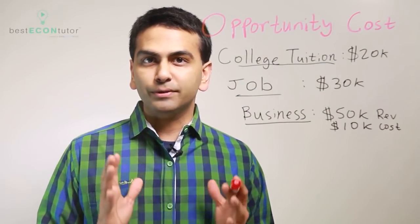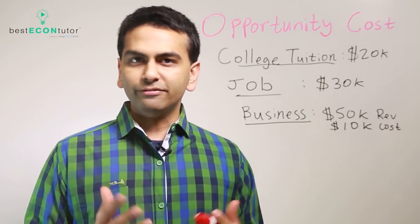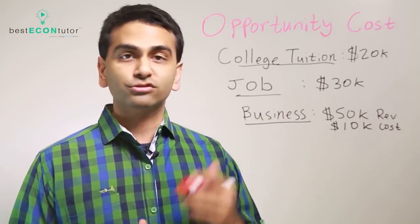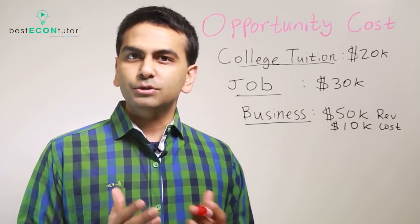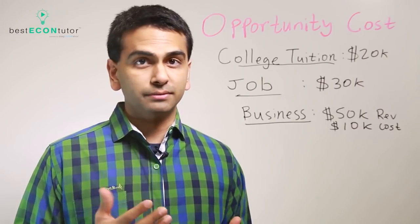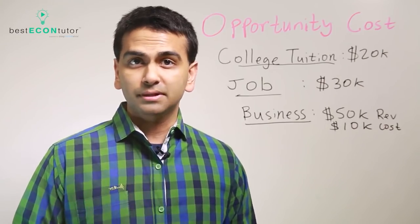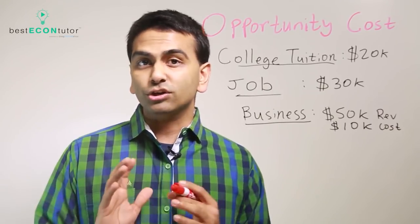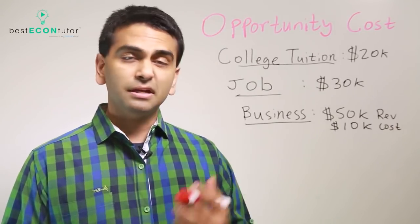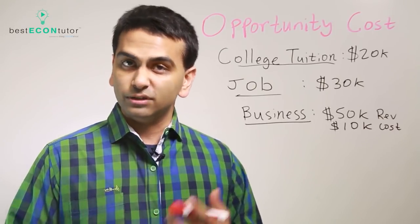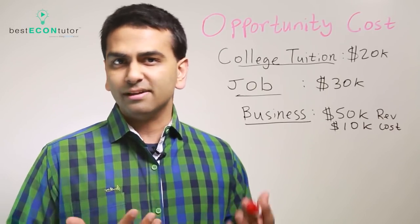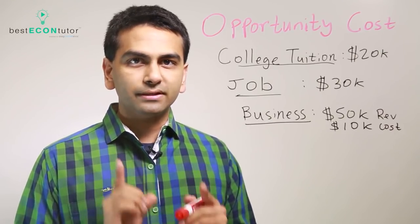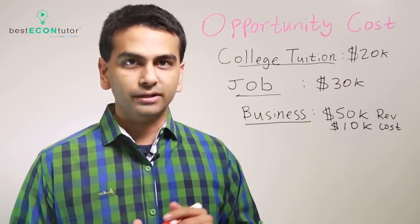So the first thing is opportunity cost. What if you have an option to go to college where the tuition is $20,000, but you have a couple of alternatives. Instead of going to college, you could have a job that would pay you $30,000, or you could start your own business where you'd get $50,000 expected revenues with a $10,000 cost of operating. So here's a question: what is your opportunity cost of going to college?